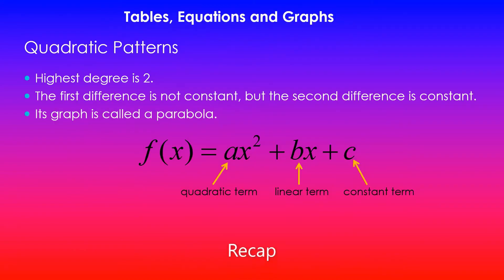Quadratic patterns will have a highest degree of 2 and the first difference will not be constant. That will hint that this particular pattern might be quadratic. Once you have found the first difference, if it is constant then it was linear. But if it is not constant, then you find the second difference and see if it is constant. If the second difference is constant, then the pattern you are looking at is a quadratic pattern.